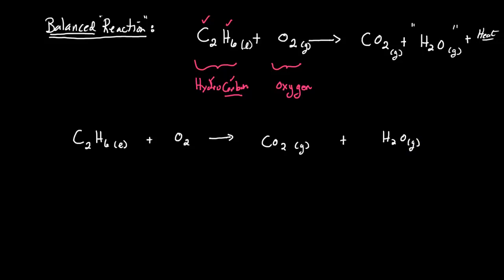Starting with carbon: I have two carbons on the left in C2H6, but only one carbon in CO2 on the right, so CO2 gets a coefficient of two. I start from the beginning again — two carbons here, two carbons there, good. Moving to hydrogen: I have six hydrogens on the left but only two in H2O, so I multiply H2O by a coefficient of three, because three times two gives me six hydrogens.